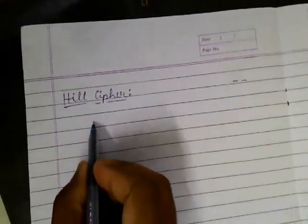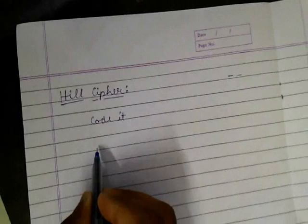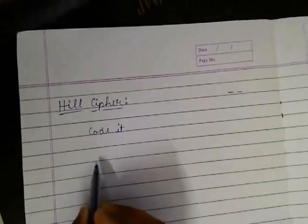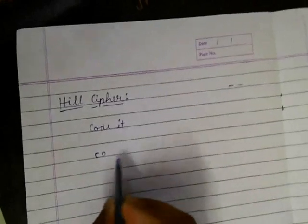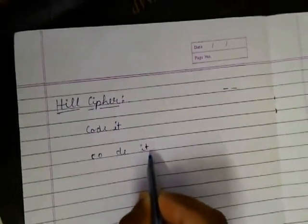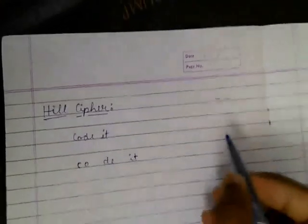Let's suppose we are given a text 'code it'. Now we'll divide the text into blocks of two alphabets: C-O, D-E, I-T. If there's one extra letter, then we add a filler, that is X, Y, Z. The filler X will be added to make a block.